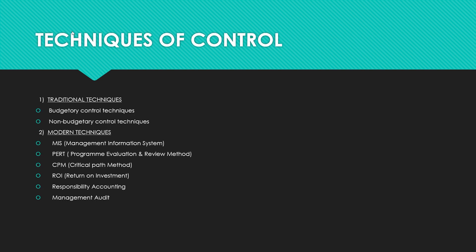Now we can go to the techniques of controlling. There are two types: traditional techniques — which you have to study according to the syllabus — budgetary control techniques and non-budgetary control techniques. Modern techniques: you just need to know the names — MIS (Management Information System), PERT (Program Evaluation and Review Method) which comes under operations management in MBA, CPM (Critical Path Method) also in MBA, ROI (Return on Investment) studied in managerial economics, and responsibility accounting and management audit. You have to study only the traditional techniques.